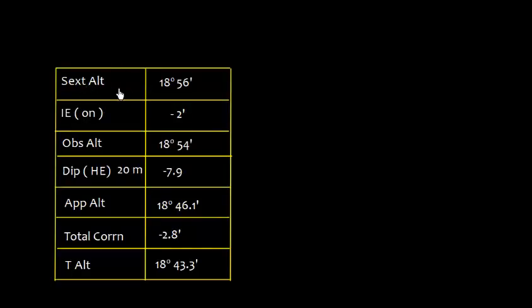Similarly, let's find out what is the true altitude. So here this is the sextant altitude which is given, 18° 56'. Index error: if it is on the arc, it has to be subtracted, which is minus 2'. Then we get observed altitude, which is 18° 54'.